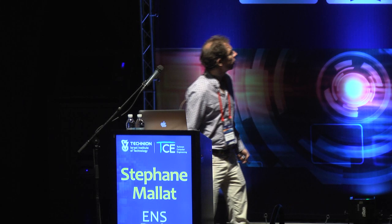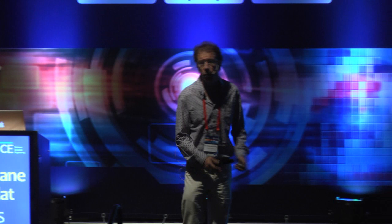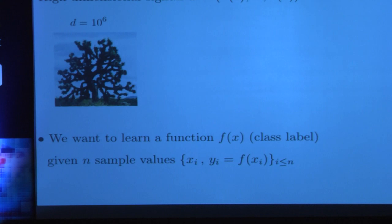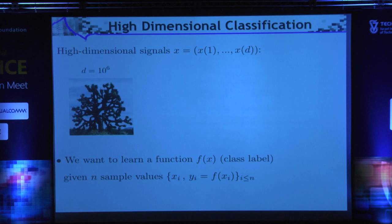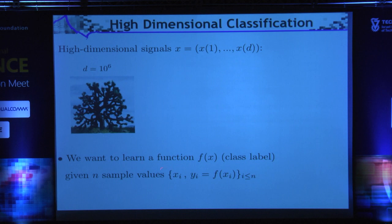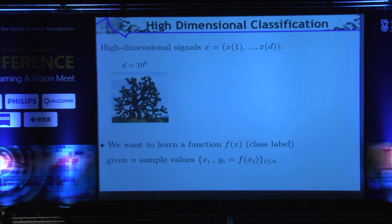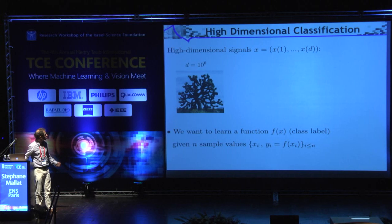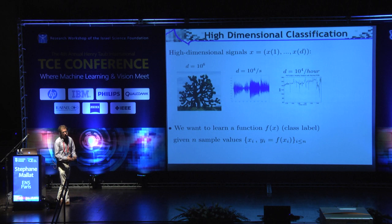Let me begin from basics. The type of problem we'll be looking at are problems of high-dimensional signal classification. Namely, you have a vector of data X of D coordinates — think of an image with a million pixels, a million coordinates. The goal, mainly for classification, is that you have a number of example X_i, and for each X_i you have a certain label, and you'd like to learn the class of any possible signal.